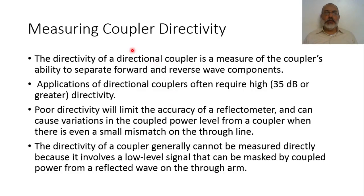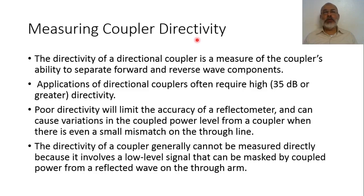In the previous video we presented the basic quantities of the directional coupler. One of the main quantities which describes the performance of the directional coupler is the directivity. The directivity is the ratio of the coupled signal to the isolated port compared to the coupled signal to the coupled port. The directivity is a measure of the coupler's ability to separate forward and reverse wave components.